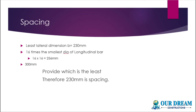Now we calculate spacing. If we have a column, we use the least lateral dimension for spacing. The spacing of stirrups is the least of: the least lateral dimension (230 mm), 16 times the smallest longitudinal bar diameter (16 × 16 = 256 mm), or 300 mm. So if we use 300 mm in this condition we provide the smaller value. Looking at 230 mm, we provide spacing of 230 mm.